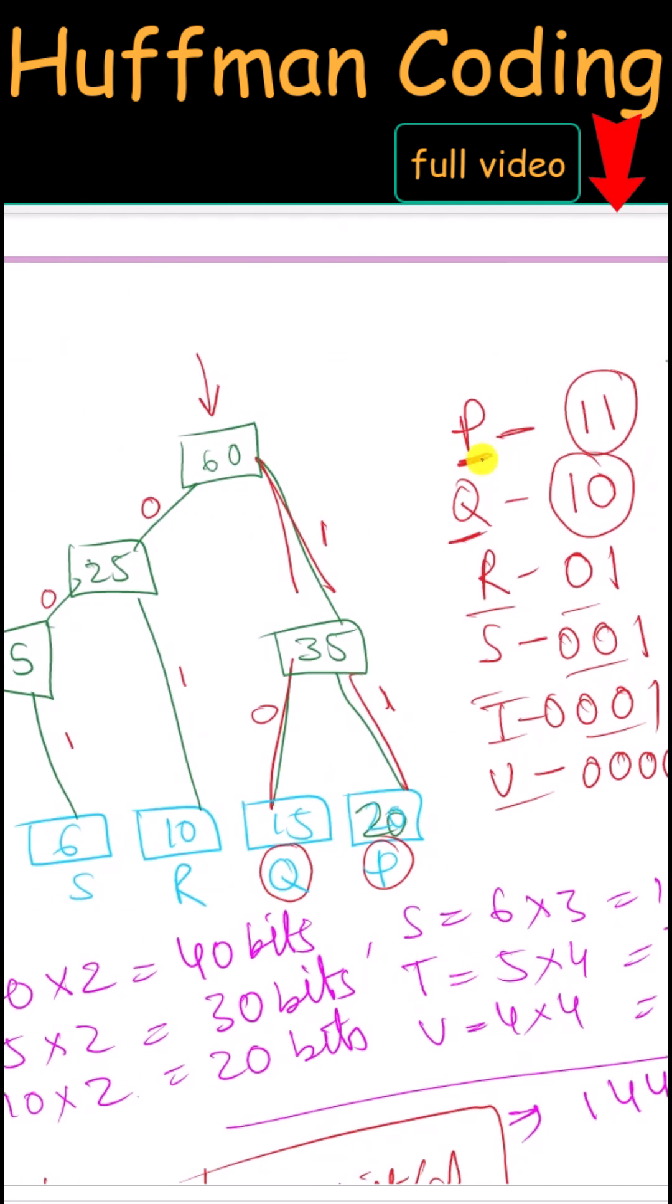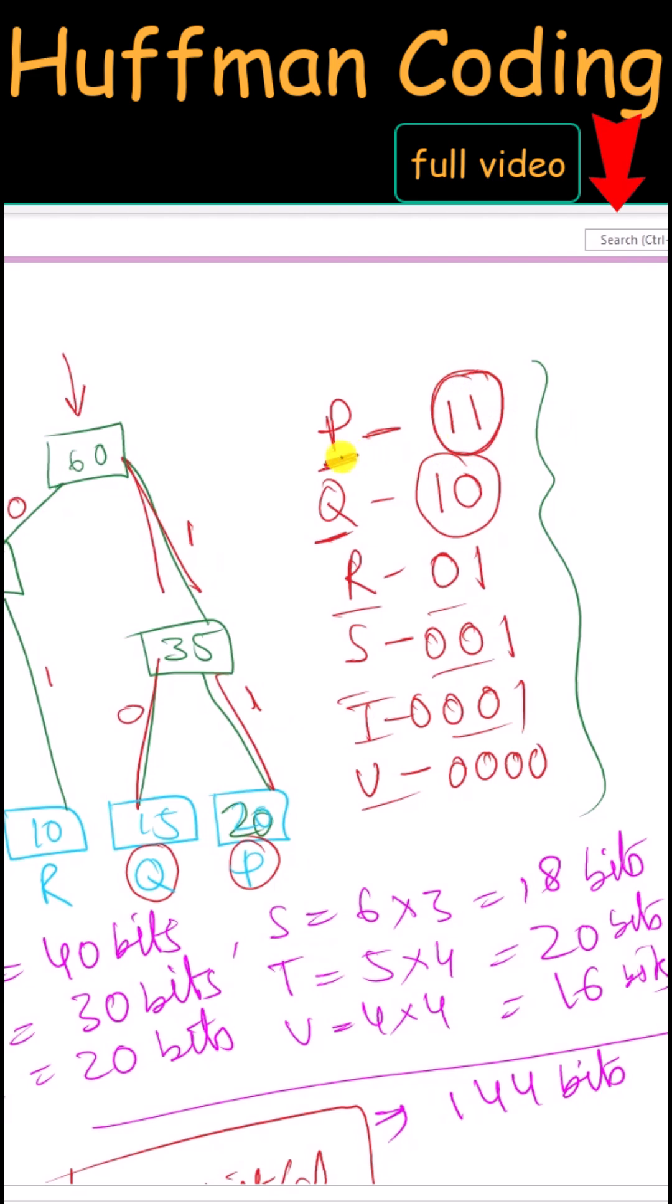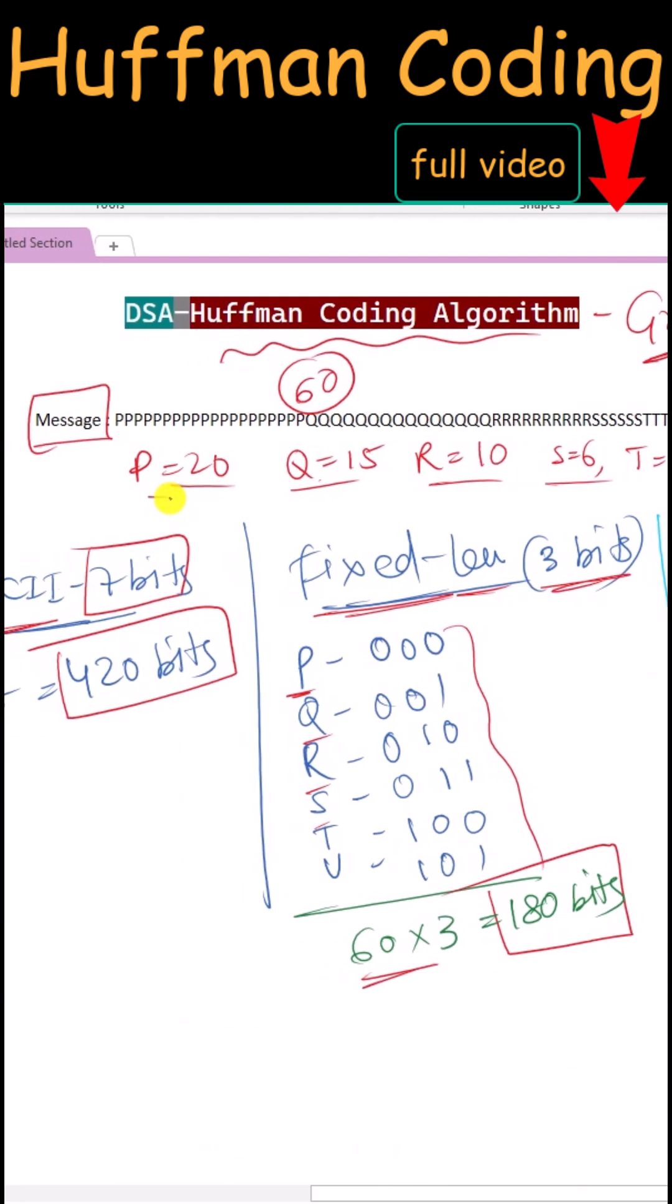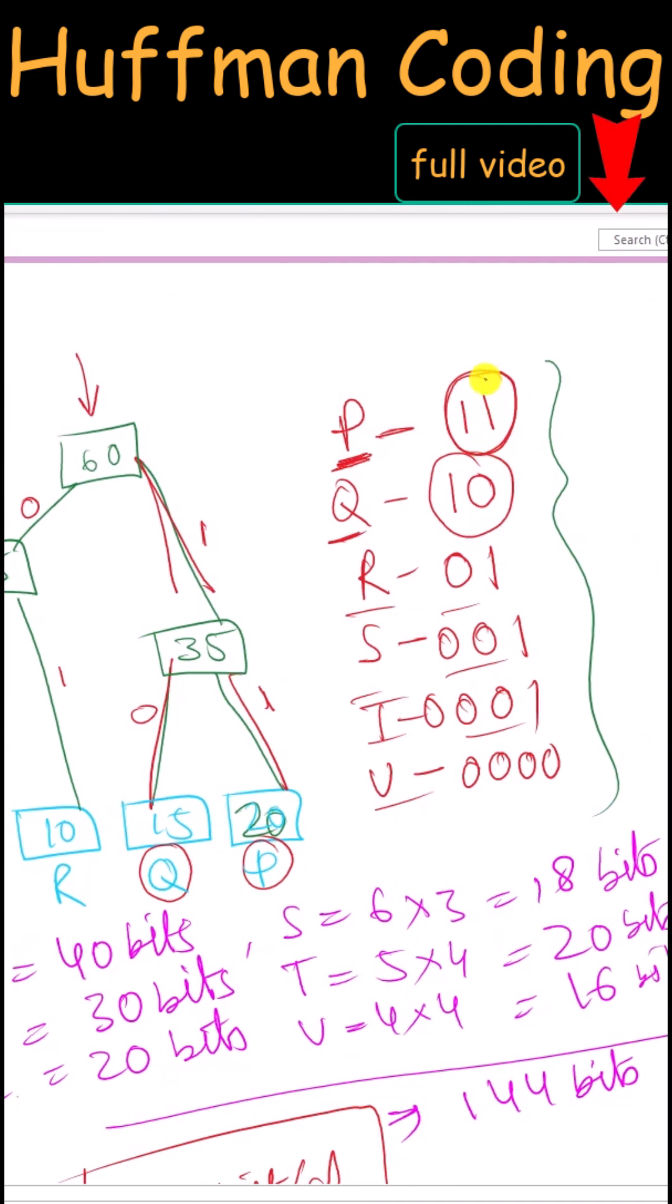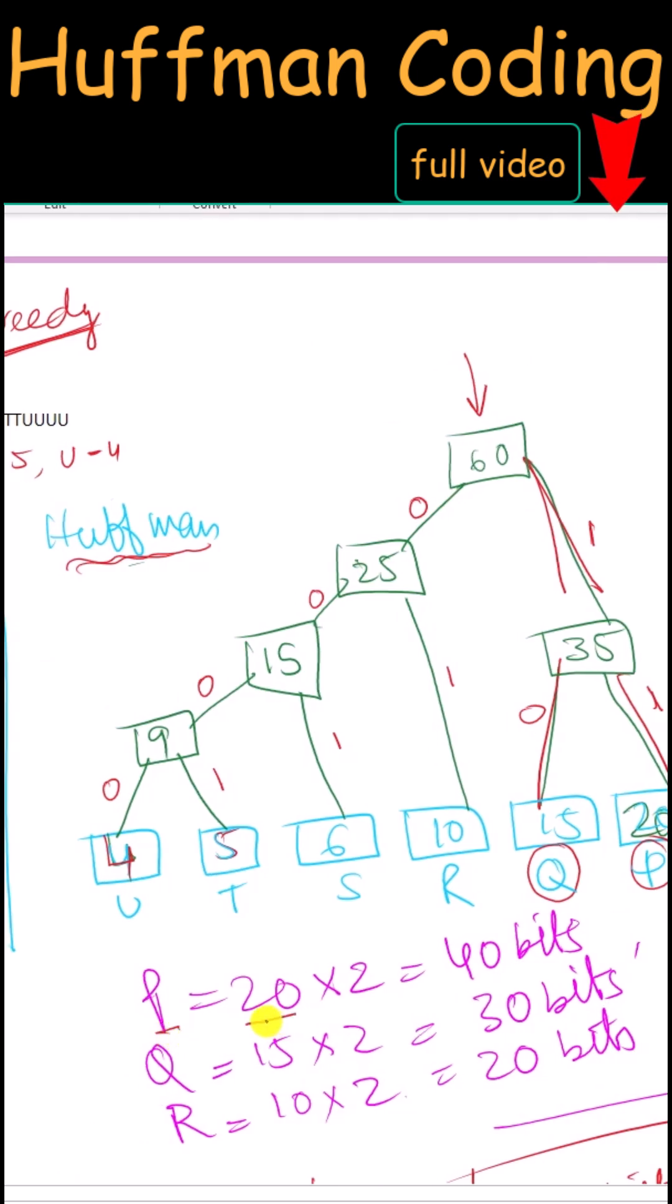In Huffman coding, the most frequent character will be represented using fewer bits. Here P was having the frequency 20, so it is represented using only two bits.